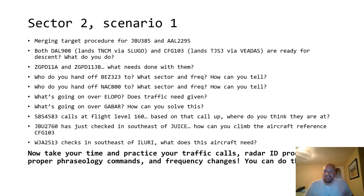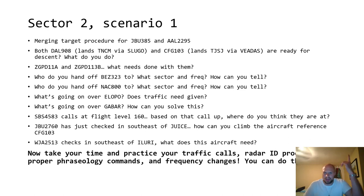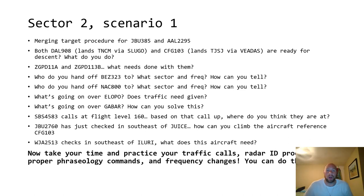Merging target procedures — turbo jets 10,000 feet or above, we have to make sure we give them that. JetBlue 385 and American 2295 are opposite direction, 1,000 feet apart. They are great candidates for merging target procedures. Keep in mind what phraseology you're going to use. Both Delta 908, who lands Juliana or St. Martin via Slugo, and Condor 103, who lands San Juan via Vetus, are ready for descent.